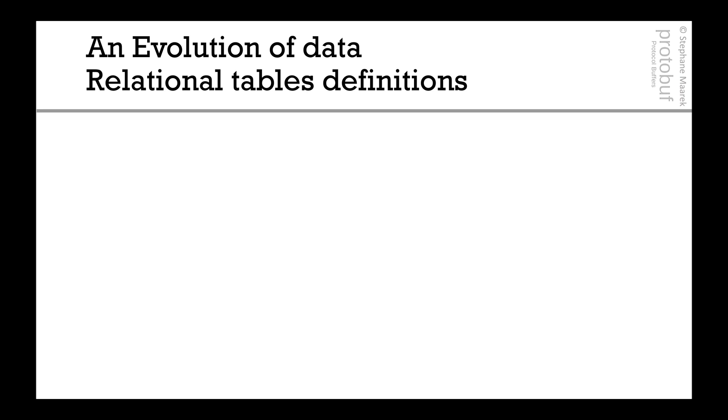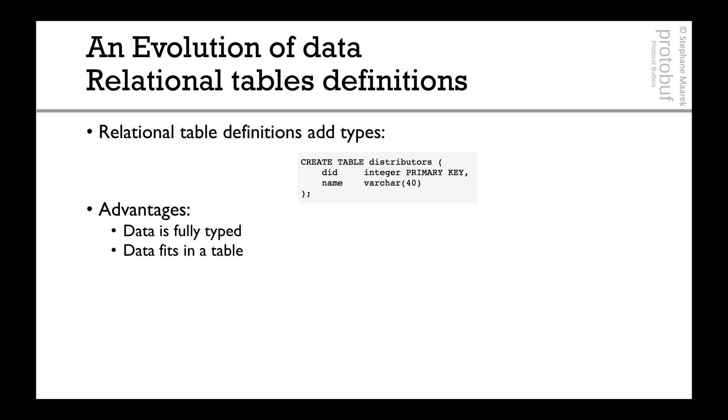Now we have relational databases and they look like this in SQL if you know SQL. You create a table and you say the first in this table is going to be an integer for the column ID and then there's going to be a name and it's going to be a string. That's pretty good. The advantage is that the data is fully typed. The data fits in the table. So like a CSV, you can really visualize it really well.